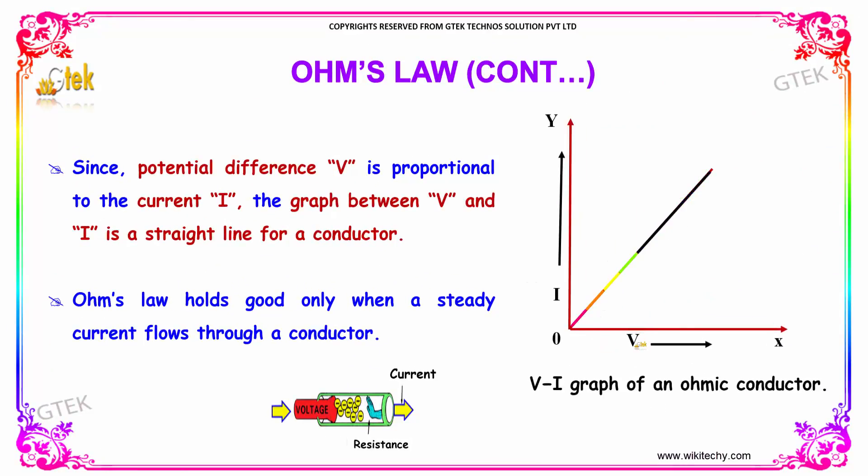Since potential difference V is proportional to the current I, the graph between V and I is a straight line for a conductor. Ohm's law holds good only when a steady current flows through a conductor.